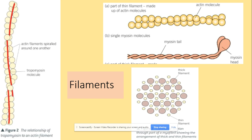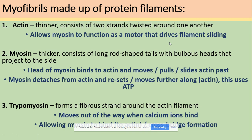Let's have a look at the filaments you need to be aware of. We've got myosin molecules, which are easy to recognize because they have a myosin head. We've got actin filaments, which are really thin. Around the actin filament, we've got another molecule wrapped around it that covers the binding sites for the myosin head — this molecule is called tropomyosin. Looking under the microscope at the arrangement of actin and myosin, you will see thick and thin filaments: thin filaments are actin, thick filaments are myosin. Actin consists of two strands twisted around each other, which allows myosin to function properly in terms of the filament sliding mechanism.